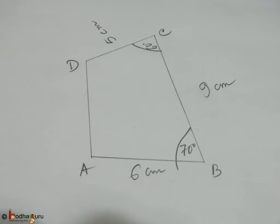Say we are going to construct a quadrilateral ABCD where AB is equal to 6 cm, BC is equal to 9 cm, CD is equal to 5 cm. So these are the three sides which are given and angle B is equal to 70 degrees and angle C is equal to 60 degrees.